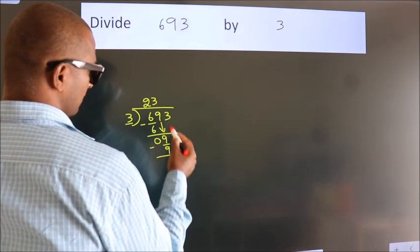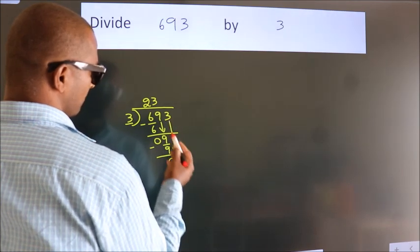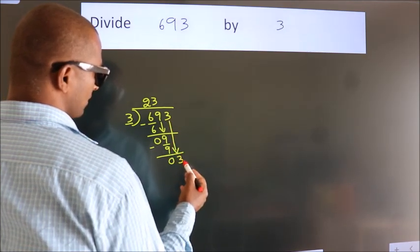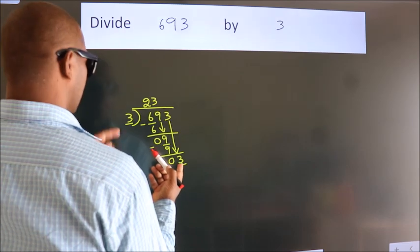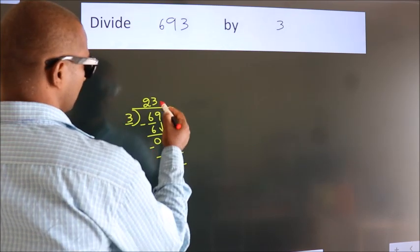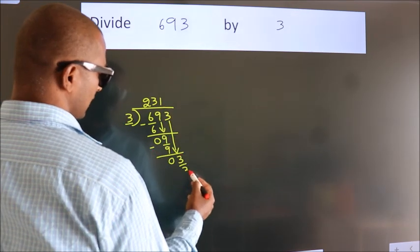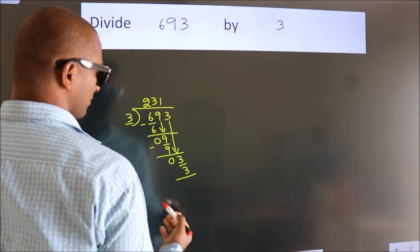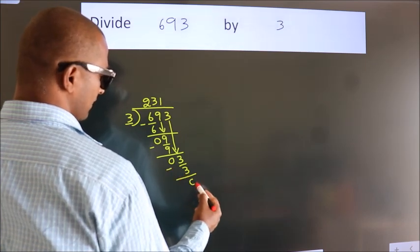After this, bring down the beside number. So 3 down. So 3. When do we get 3? In 3 table. 3 ones, 3. Now, we subtract. We get 0.